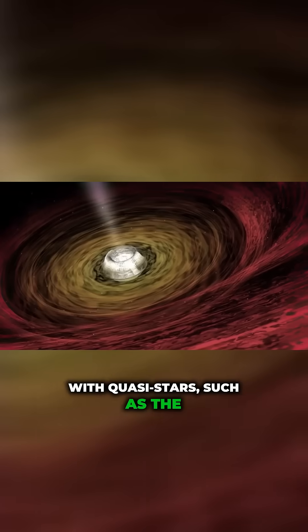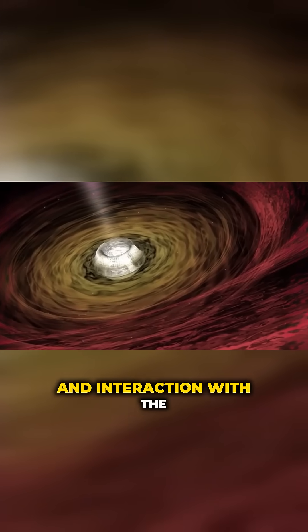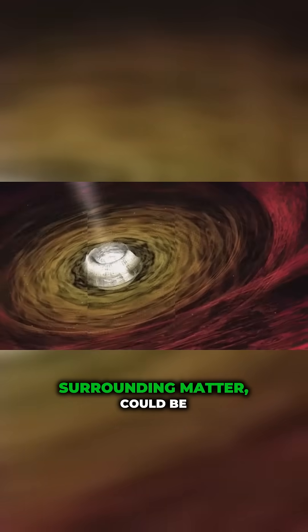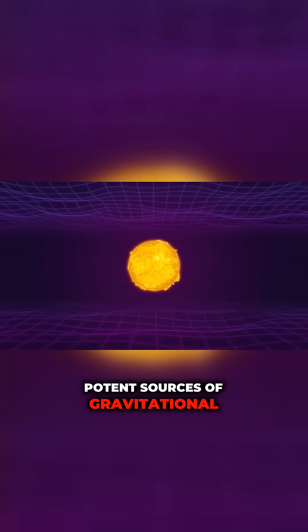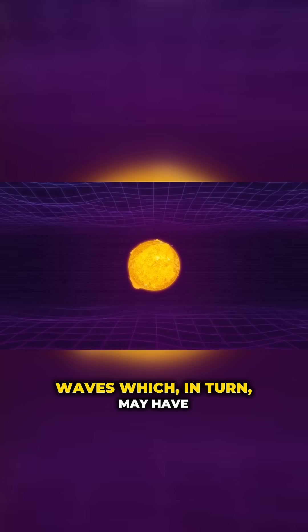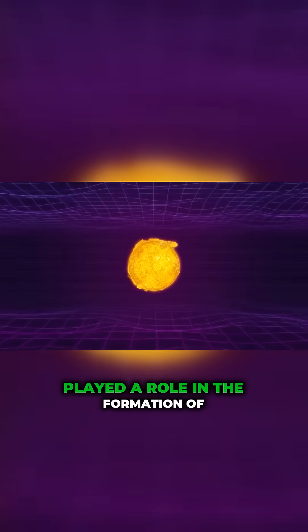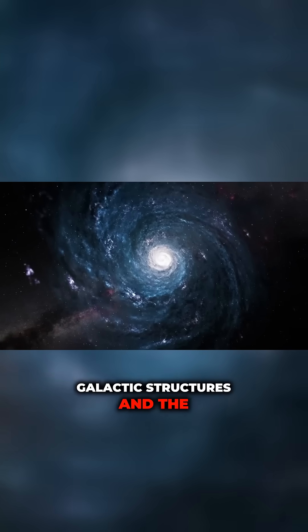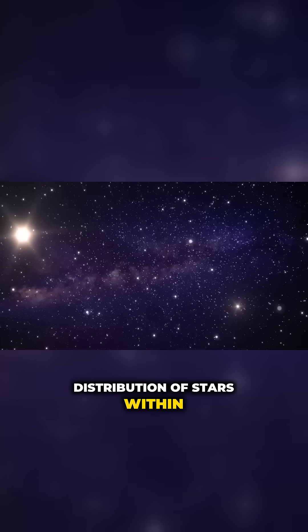The dynamic processes associated with quasi-stars, such as the collapse of the central black hole and interaction with the surrounding matter, could be potent sources of gravitational waves, which in turn may have played a role in the formation of galactic structures and the distribution of stars within galaxies.